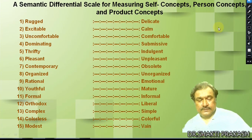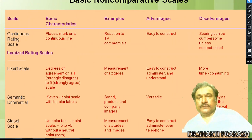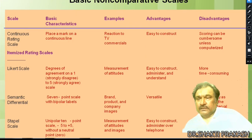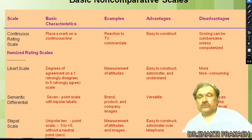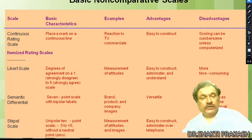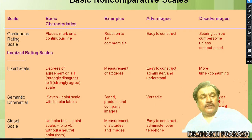Now the basics of non-comparative scales — their characteristics, advantages, and disadvantages. For the continuous rating scale: the basic characteristic is that respondents place a mark on a continuous line. An example is that reactions could be captured across a range. The advantage is that it is easy to construct. The disadvantage is that scoring can be cumbersome unless computerized.